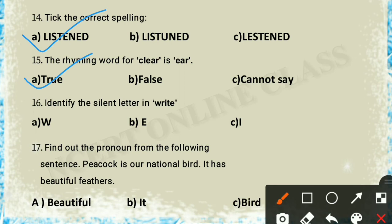Question 16: identify the silent letter in 'write'. The silent letter is the one that is not pronounced. In 'write', the silent letter is W, so option A is the correct answer.